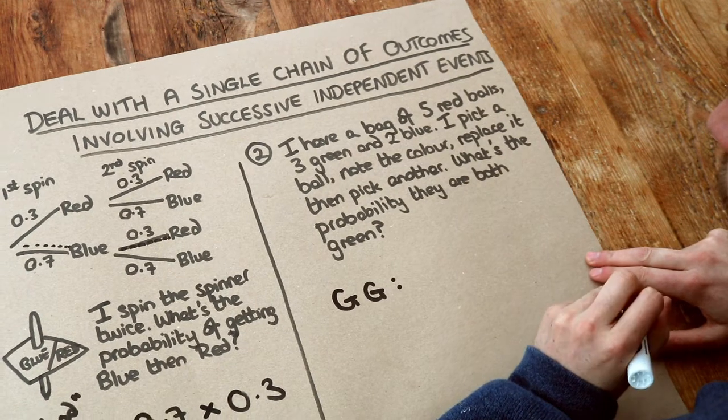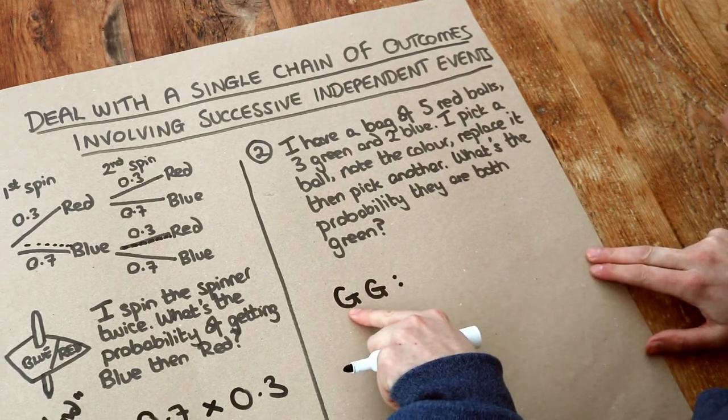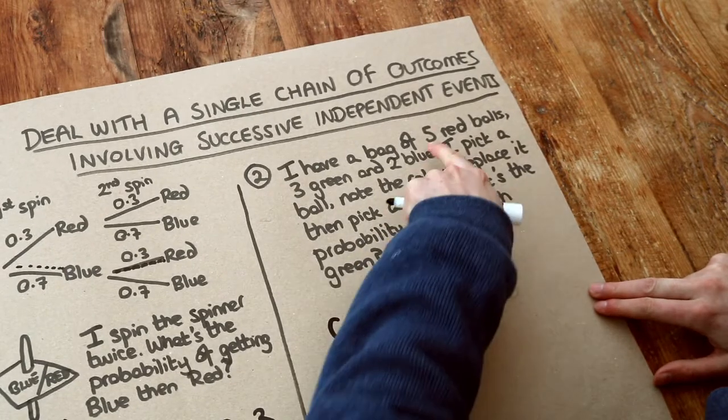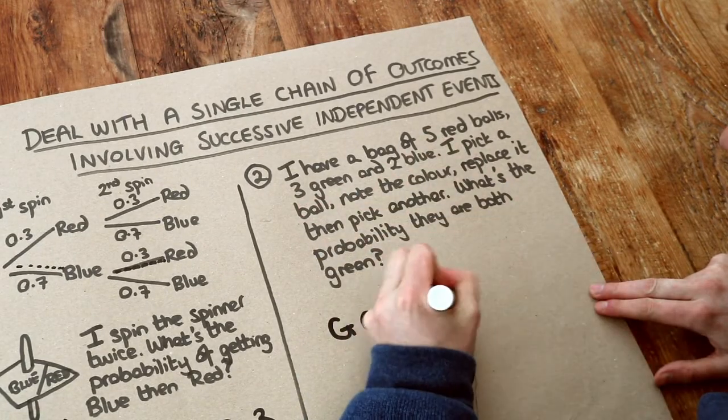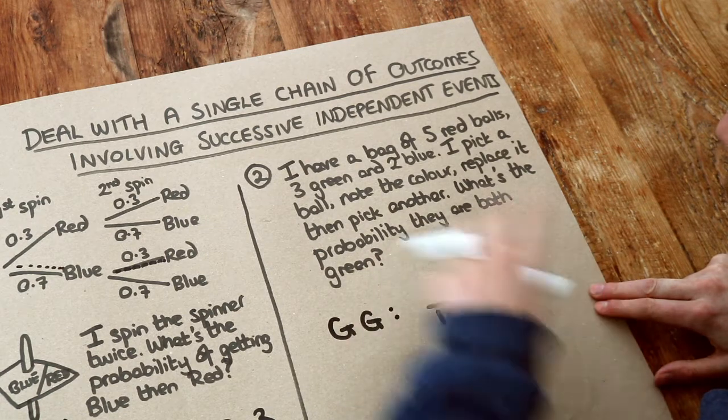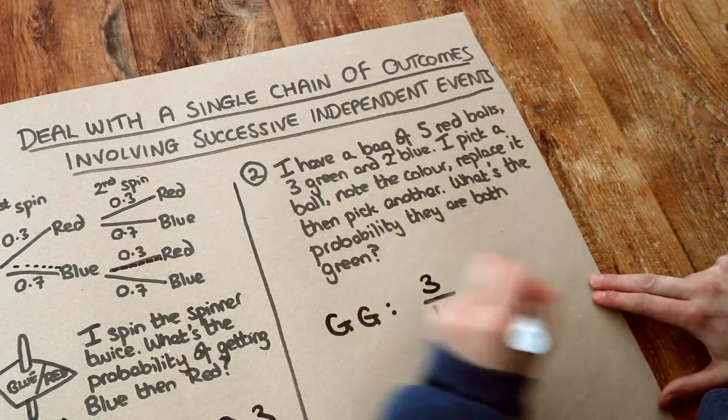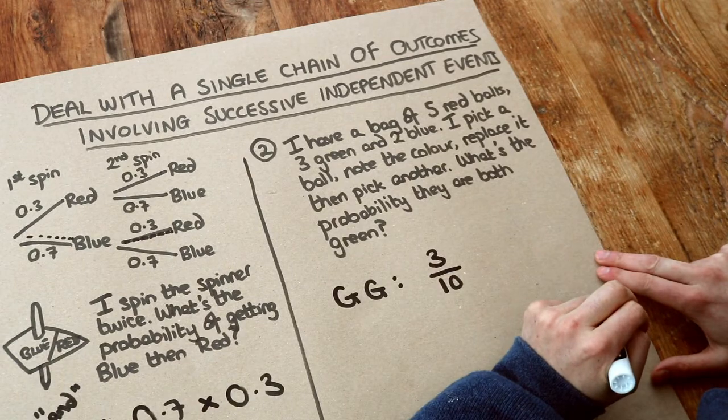Now what's the probability that the first ball is green? Well how many balls do we have in total? Well five plus three plus two, that's ten balls in total. So it's out of ten. And how many of them are green? Well three of them are green. So the probability of getting green on the first pick is three tenths.